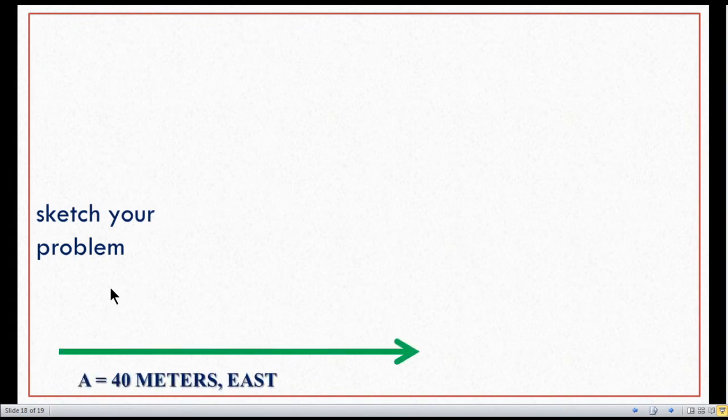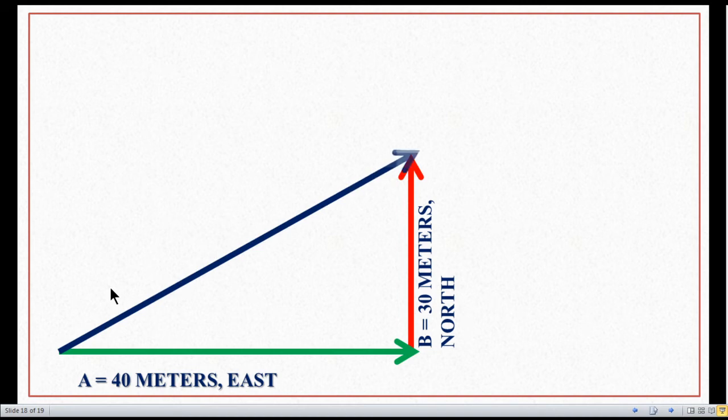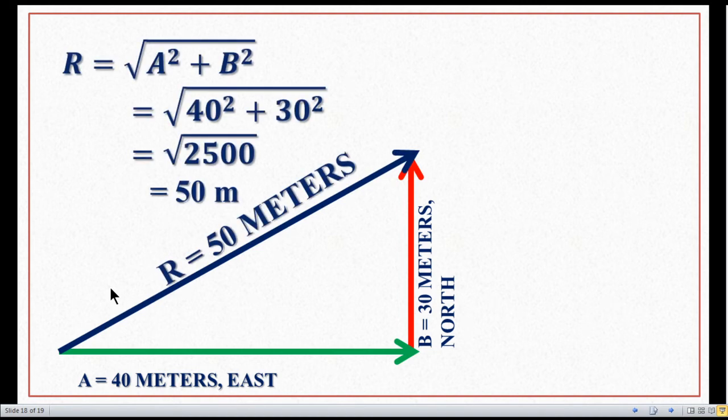A man walks 40 meters east and then 30 meters north. We can find out the resultant vector, which is 50 meters. By calculation we use Pythagorean theorem.